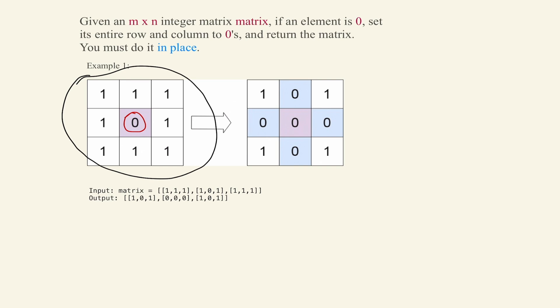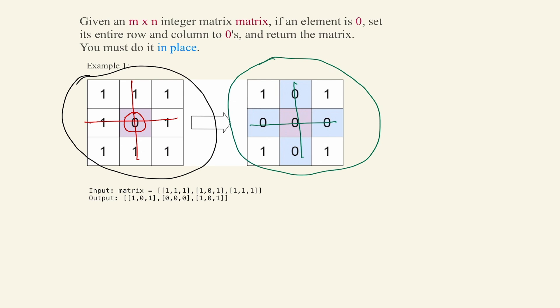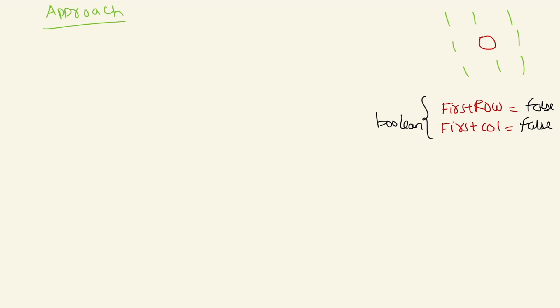For example, we have a 0 at this position, so we need to make all of that row 0, and all of that current column also 0. As we can see, we have zeros here, and we need to do this in the same matrix. Let's understand the approach for this problem.